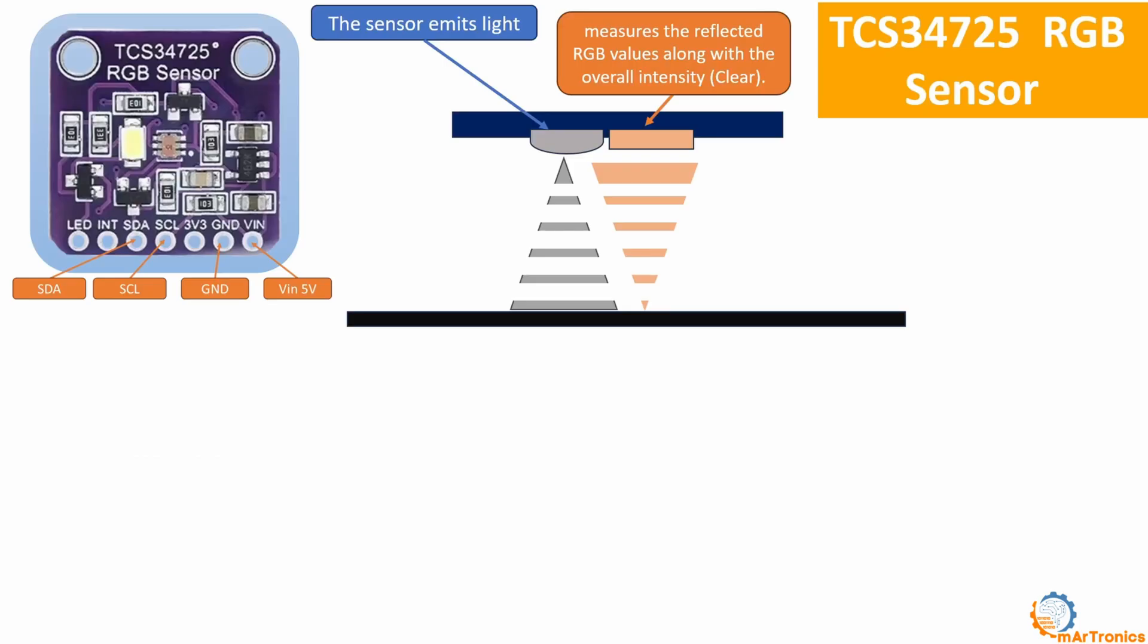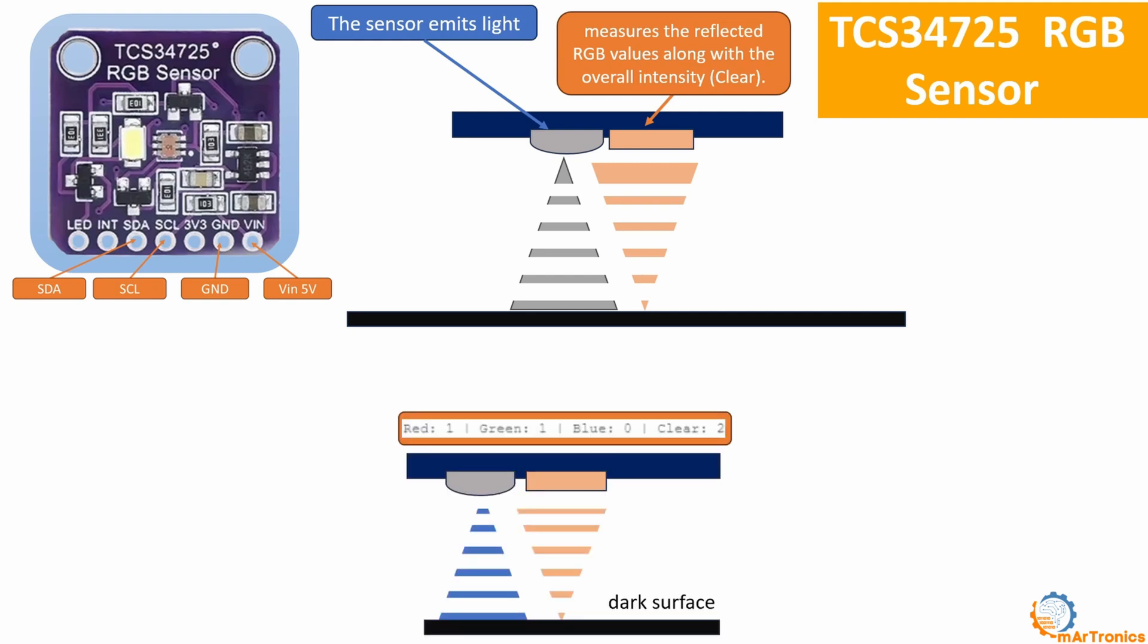I will now explain how this sensor works. It is a color sensor that measures the intensity of light in red, green, blue, and transparent colors. This sensor uses a built-in filter to divide incident light into its color components, thus measuring the reflection of light from a surface, making it possible to detect color or brightness differences.